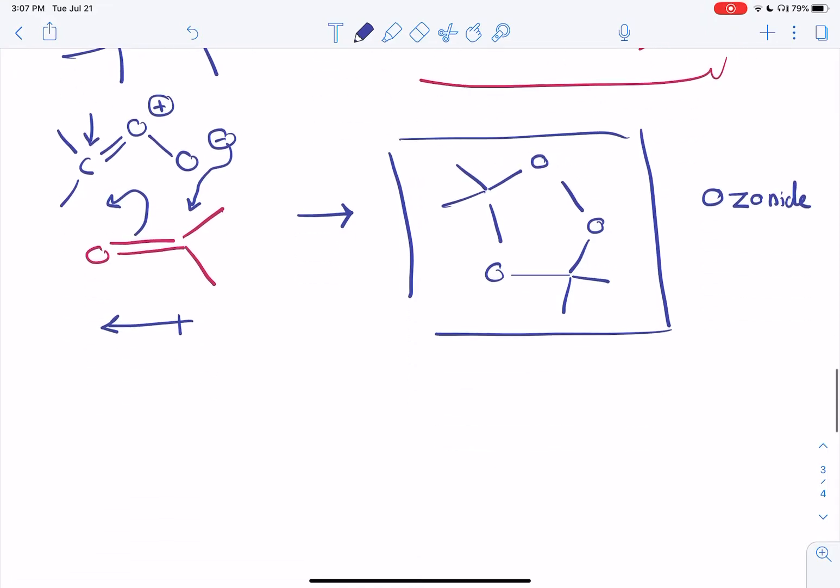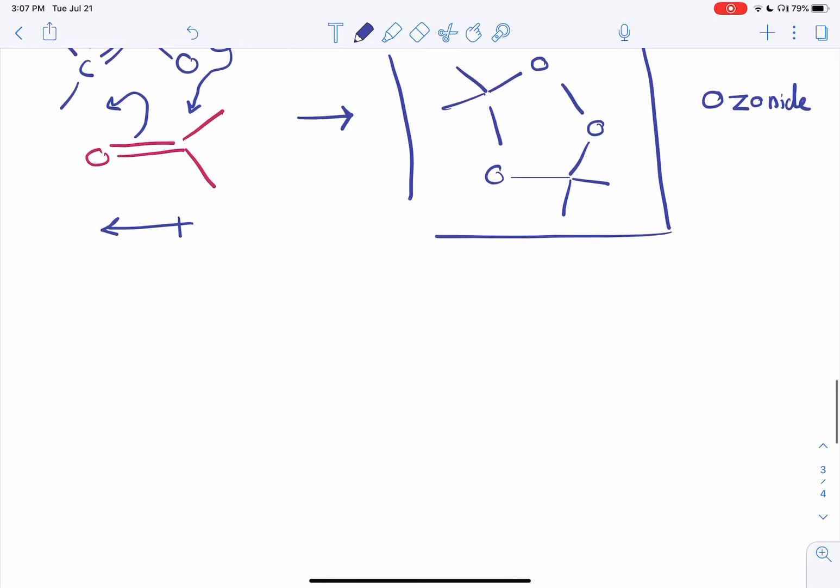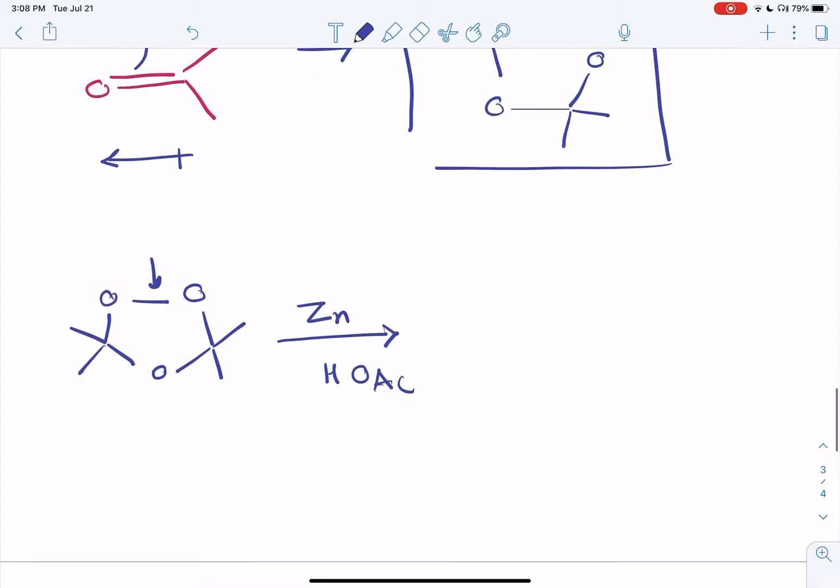Now what is going to happen to this is pretty interesting. Once you take that and subject that to reducing conditions such as, for example, zinc and acetic acid, this bond, the oxygen-oxygen bond, is going to get reduced. And essentially after a multiple hydrolysis phenomenon,